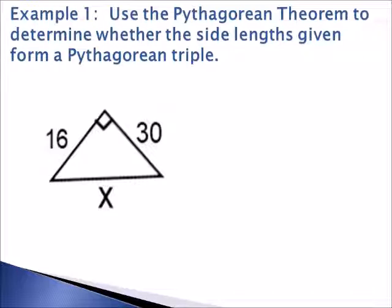Let's take a look at example one. Use the Pythagorean theorem to determine whether the side lengths given form a triple. The first thing you need to realize is that across from your 90 degree angle is your hypotenuse. In this case, our hypotenuse is unknown but both legs are known.